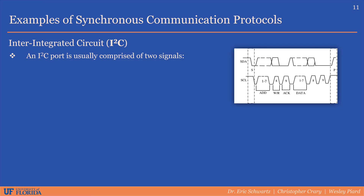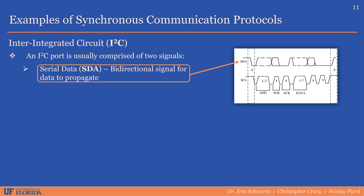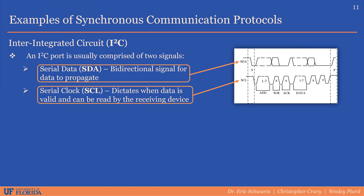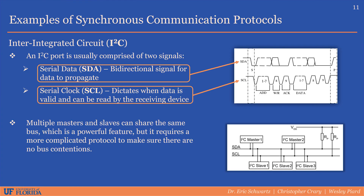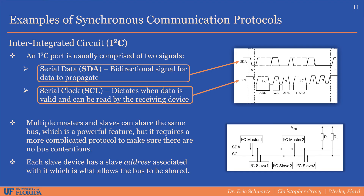The next synchronous communication protocol we will discuss is Inter-Integrated Circuit, also known as I-squared-C or I2C. An I2C port is comprised of two signals. The first is serial data, which is bi-directional and is where the data is propagated. The second is the serial clock, and just like SPI, this clock signal tells the receiving device when each data bit is valid. Multiple master and slave devices can share the same bus, which is a powerful feature, but it requires a more complicated protocol to ensure there are no bus contentions. Each slave device has a slave address associated with it, and this is what allows the bus to be shared by multiple devices.